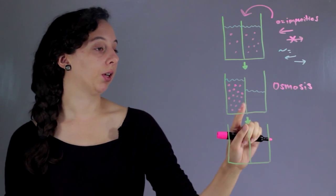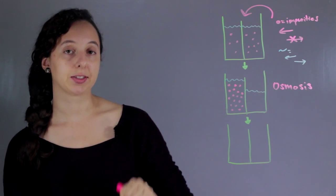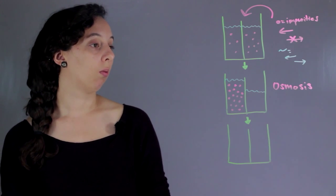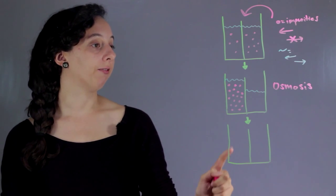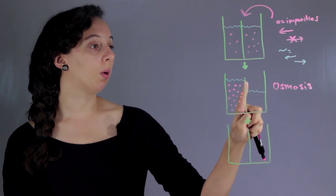Basically trapping these impurities to the left side or on whatever back side of the selectively permeable membrane. And as a result the water level is actually different. So you have a higher water level in the side with all the impurities and you have a lower water level in the side with no impurities